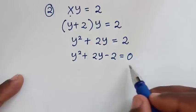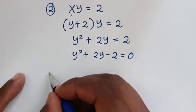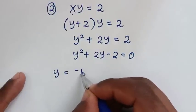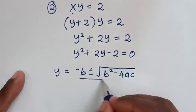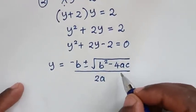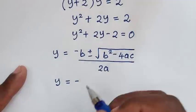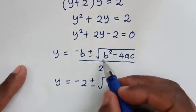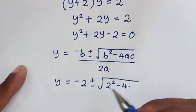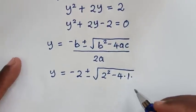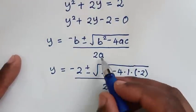From this quadratic equation in terms of y, we'll solve using the quadratic formula: y is equal to negative b plus or minus square root of b squared minus 4ac, over 2a. Substituting: negative b is negative 2, plus or minus square root of b squared which is 2 squared, minus 4 times a which is 1, times c which is negative 2, over 2 times a where a is 1.